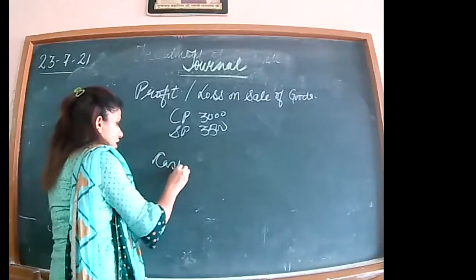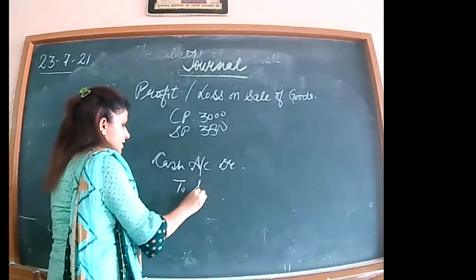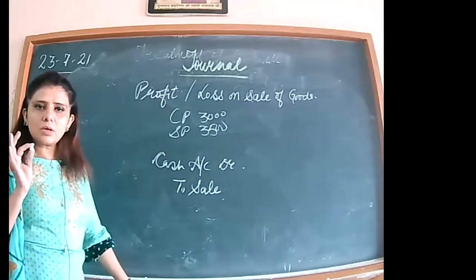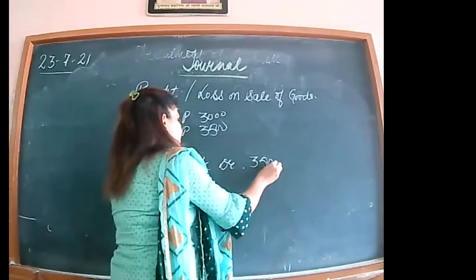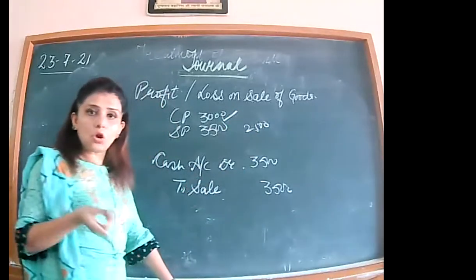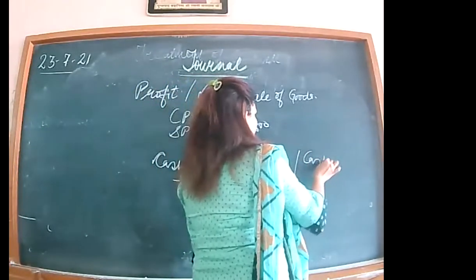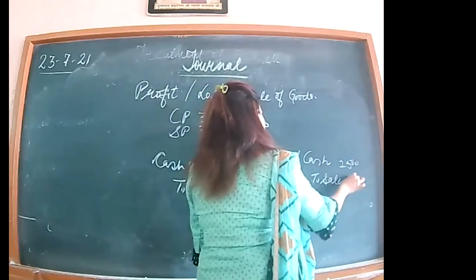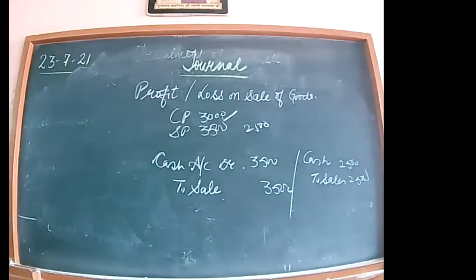The entry will be: cash account debit to sales account — with Rs. 2,500. That's it. So this is what profit or loss on sale of goods means.